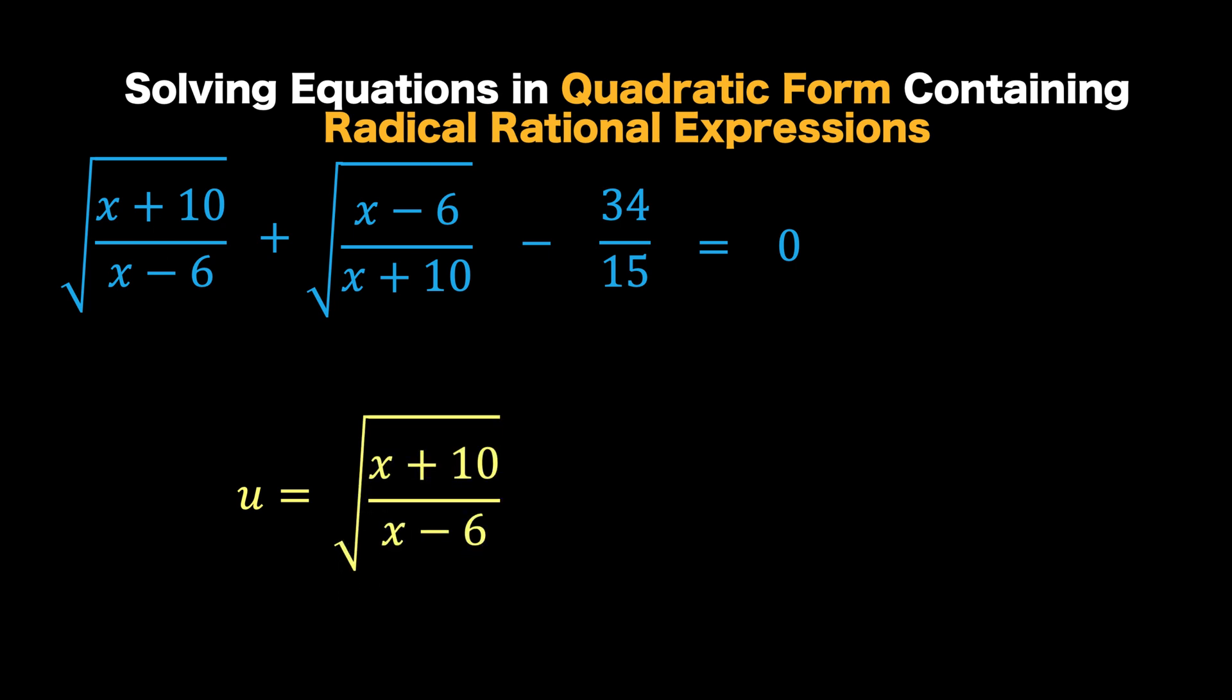the square root of x plus 10 over x minus 6. Notice that the second radical expression contains a rational expression that is the reciprocal of the first rational expression here. And since x plus 10 over x minus 6 and x minus 6 over x plus 10 are multiplicative inverses, then let's get the reciprocal of u, and its reciprocal is 1 over u. And 1 over u now is equal to the square root of x minus 6 over x plus 10. With this as our substitution,